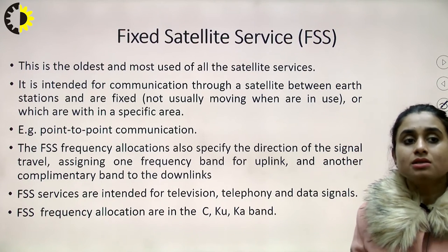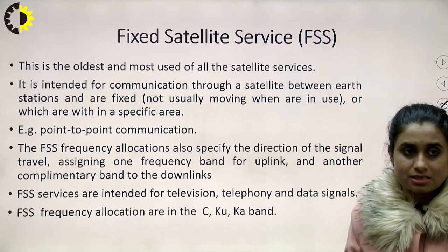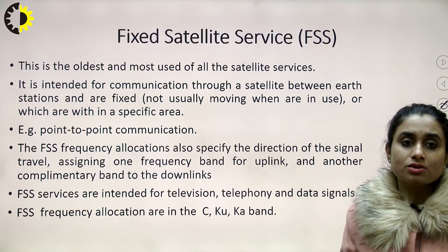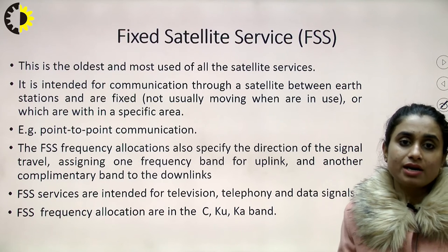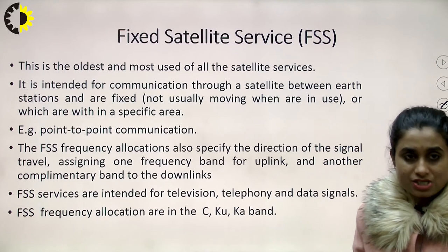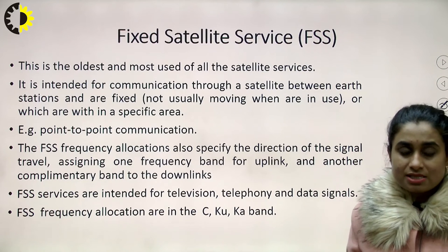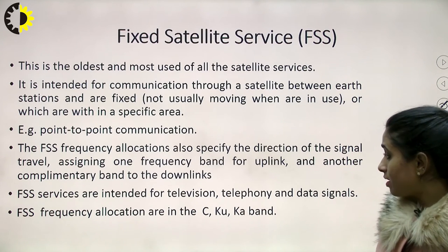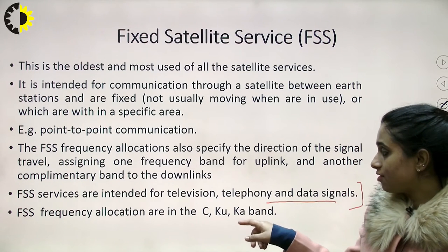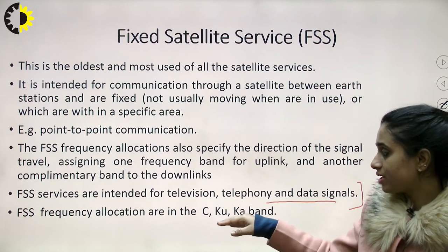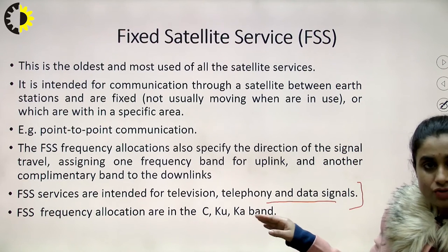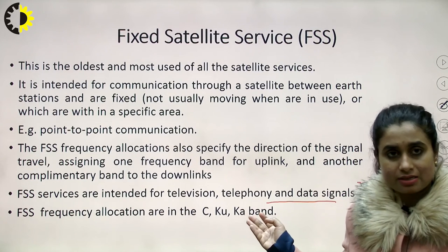FSS — Fixed Satellite Services — is the oldest form of satellite service. As the name suggests, fixed satellite services are not of use when we are moving; they are basically used for point-to-point communication. FSS is intended for television, telephony, and data signals. The frequency allocations for FSS are in C band, Ku band, K band, and Ka band, which we will discuss in later slides.